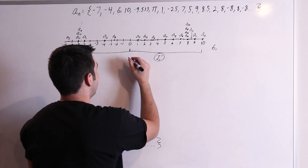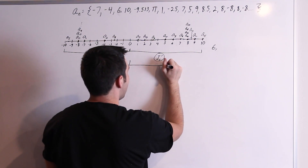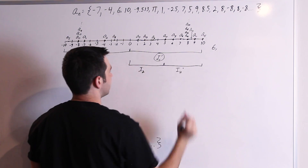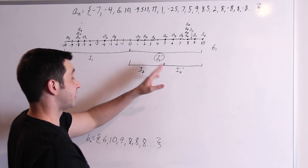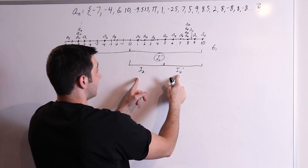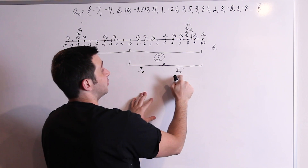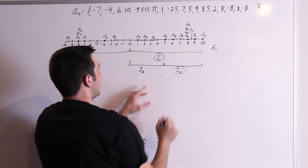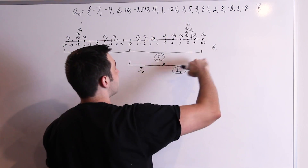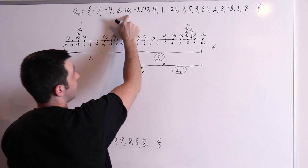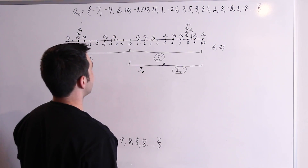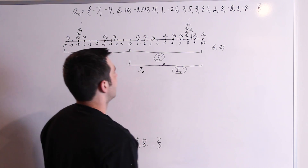Now just repeat what we did with I1 prime. Split that up into two halves: from 0 to 5, and 5 to 10. That'll be I2 and I2 prime. Again, for the same reason as before, one of these must contain infinitely many terms because there were infinitely many terms in I1 prime. In this case, it's just I2 prime — all the 8s lie in there. I2 just has a few finite terms, so you've got to pick I2 prime, and then pick a number in there. I'll pick 10, the second term of our subsequence.